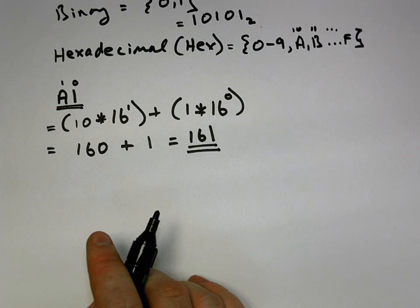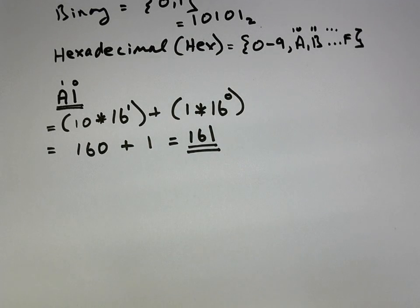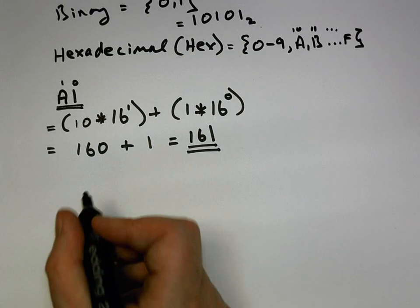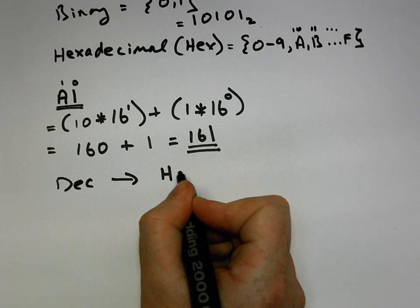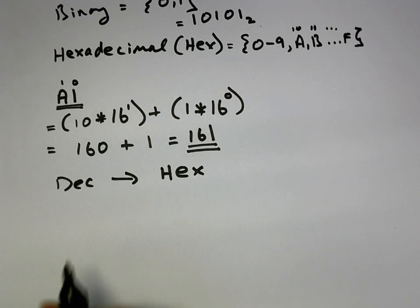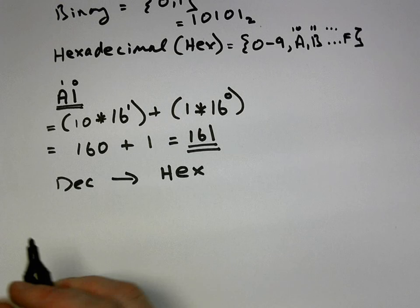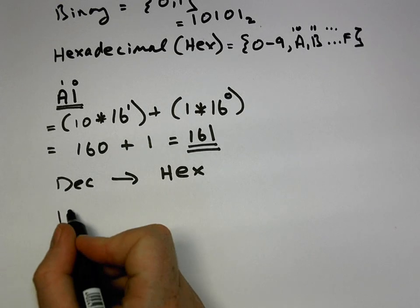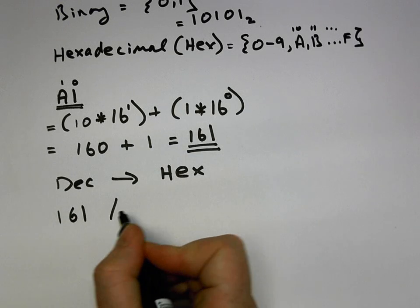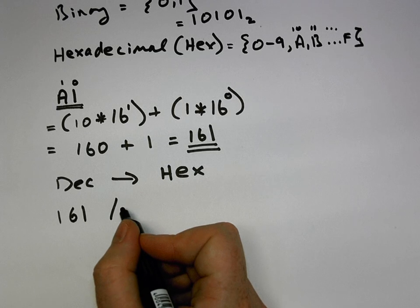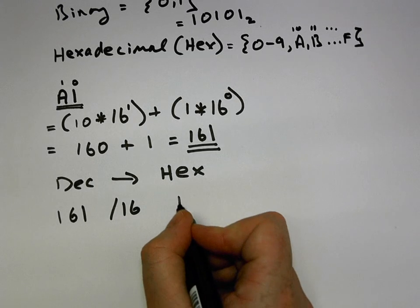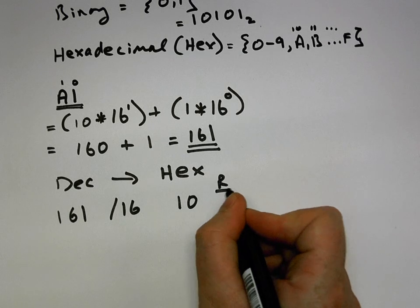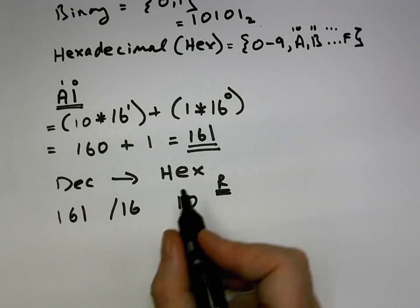So now, since we went from hexadecimal into decimal, let's do it the other way around. If we want to go from a decimal number back into hexadecimal — decimal into hex — we have the decimal number one hundred and sixty-one. We divide that by the base, which is dividing by sixteen. Sixteen into one hundred and sixty-one goes in ten times, with a remainder of one.